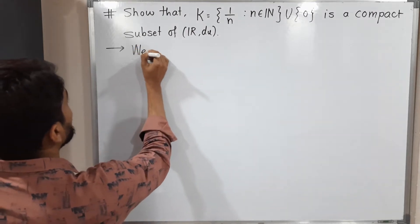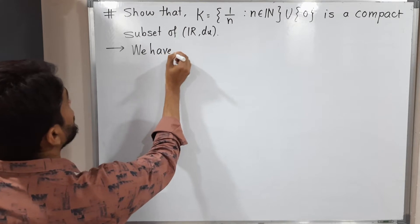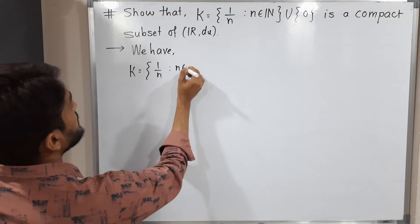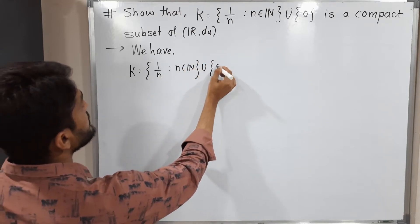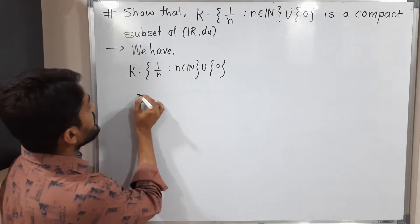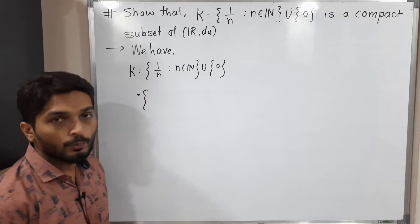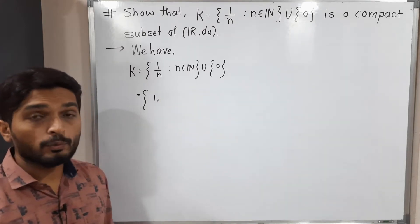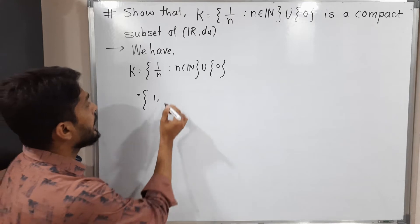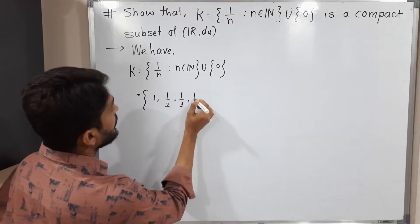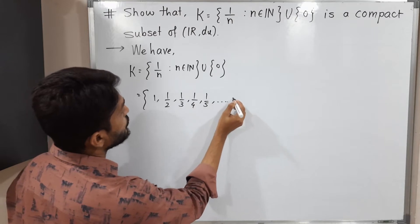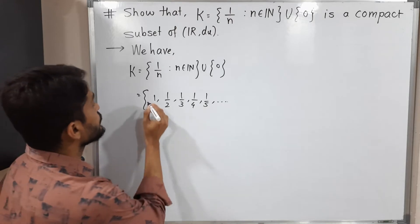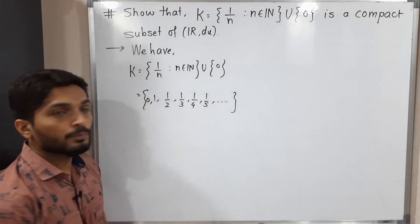We have K = {1/n : n ∈ ℕ} union with the singleton {0}. So what it means: if you put n = 1, the first element is 1. If n = 2, we get 1/2; for 3, we get 1/3; then 1/4, 1/5, and so on. And 0 is also included — they have taken the union with {0}.